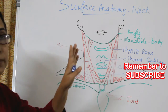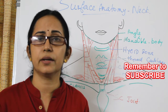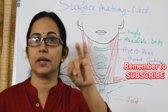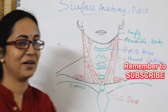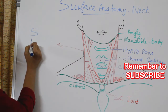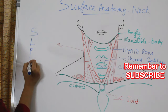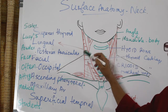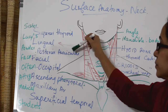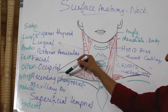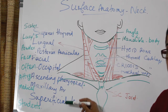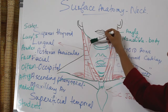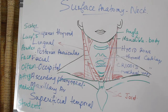The external carotid artery has eight branches. The mnemonic is: 'Sister Lucy's powdered face often attracts medical students.' The branches are: superior thyroid, lingual, posterior auricular, facial, occipital, ascending pharyngeal, maxillary, and superficial temporal artery. The maxillary and superficial temporal artery are the terminal branches of the external carotid. The internal carotid and common carotid have no branches in the neck.